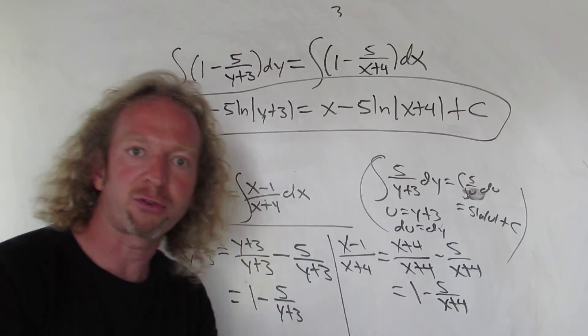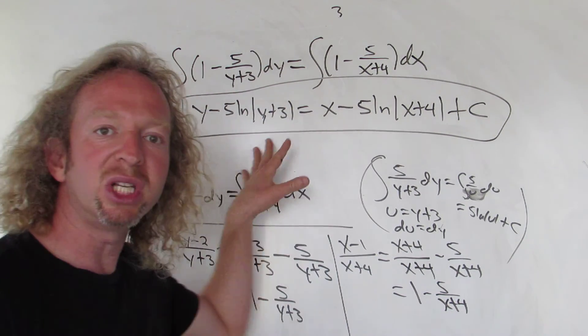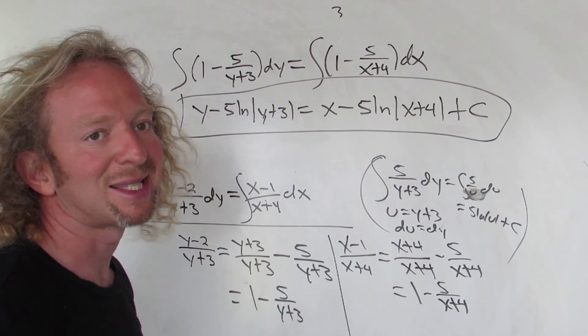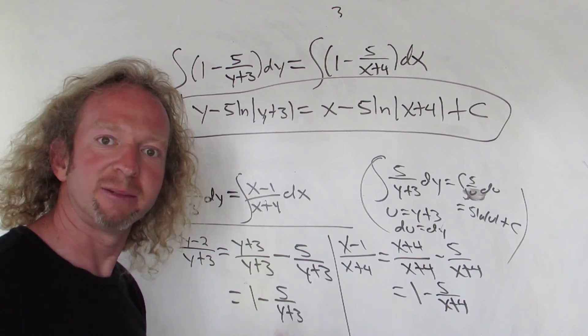And that's an acceptable answer, I suppose. The question didn't say to solve for y, it just said solve the differential equation. This would be an implicit solution because it's not explicitly solved for y. So that's it, I hope this video helps.